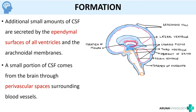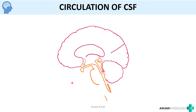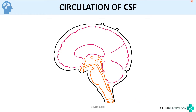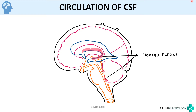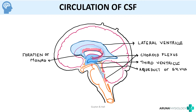Now we will move on to the circulation of CSF, best shown with a diagram. The choroid plexus forms CSF which first fills the lateral ventricle. From the lateral ventricles, through a small opening called the foramen of Monroe (or interventricular foramen), the CSF flows to the third ventricle. From the third ventricle, through the aqueduct of Silvius or cerebral aqueduct, it fills up the diamond-shaped fourth ventricle.